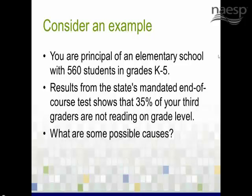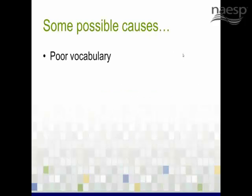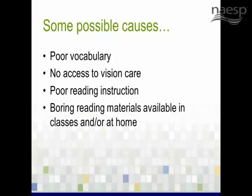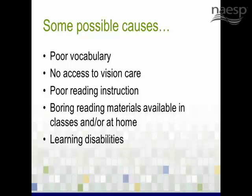Student fluency, attendance, the quality of the assessment by the principal or teachers, the study of students' needs not being correct, limited teacher capacity, teacher left and went on leave. We'll share with you some of the causes that we thought of, and they duplicate some that you called in. Some possible causes of the problem that 35% of third graders aren't reading on grade level could include poor vocabulary skills, inadequate access to vision care, poor reading instruction, perhaps reading material in class or at home is just boring or uninteresting, and students may have undiagnosed learning disabilities.